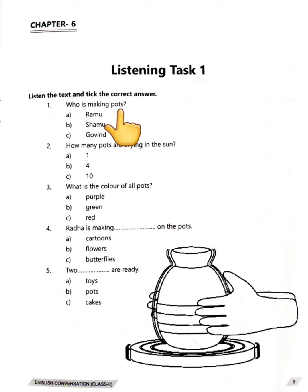Its meaning is, pots kaun bana raha hai? There are 3 options. Beta, first of all, understand the meaning of this question and then listen to the audio track which has been posted in the description box. Listen to the track properly. Okay, kids?